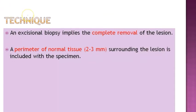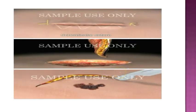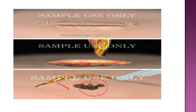The technique of excisional biopsy: an excisional biopsy implies complete removal of the lesion. As the lesion is small, you can easily remove it completely. A perimeter of normal tissue — 2 to 3 mm surrounding the lesion — is included with the specimen. You also take the normal tissue along with the lesion, and then close the operation site.